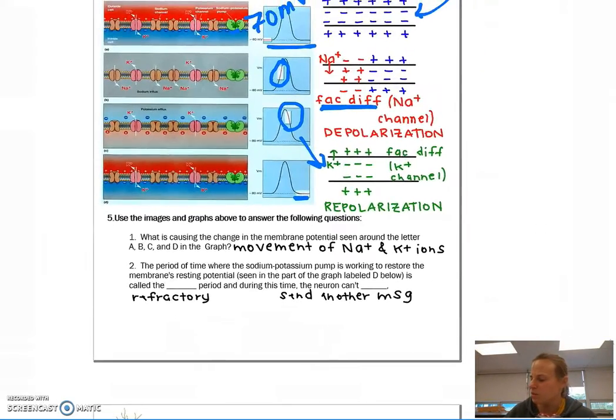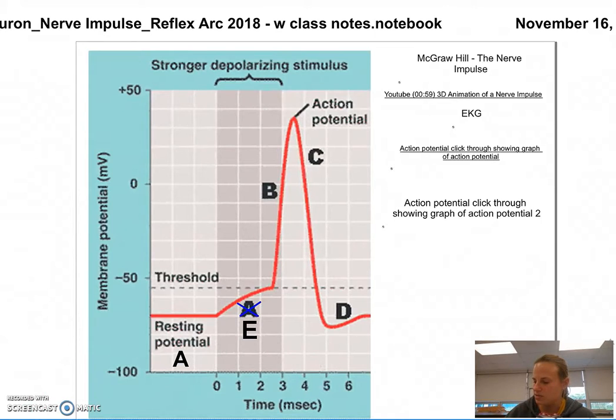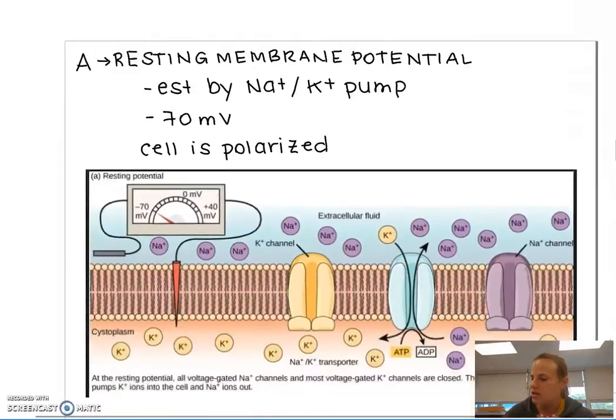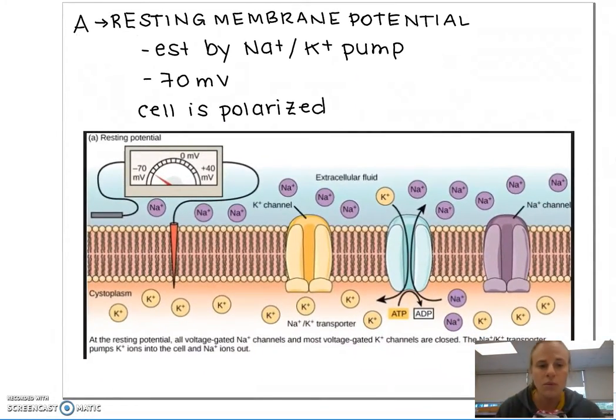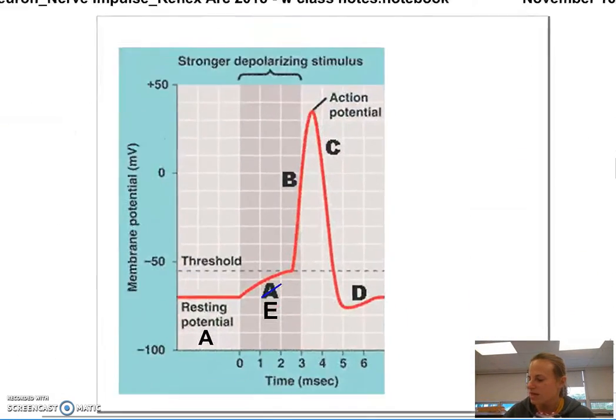So let's get a little bit more detailed about the graph and what's happening. The first part of the graph that I'd like to evaluate in further detail is part A, the resting potential. So at resting potential, we have a charge of negative 70 millivolts. In other words, if I were to hook up an oscilloscope to measure, or a voltmeter, to measure the charge across the membrane, it would read negative 70 millivolts. In this state, the cell is called polarized, and this resting membrane potential is established by that sodium-potassium pump.